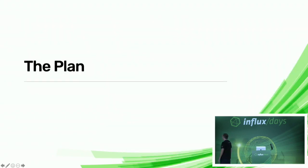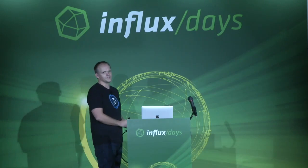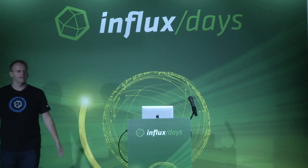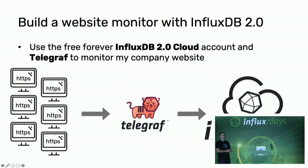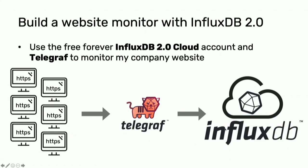I'm going to walk you through this demo. I'm going to walk you through the plan of what we're going to build, the execution of how we're going to build it, and then do the big reveal where I jump into our Cloud 2 instance and we look at data and build out this alerting system. The plan: we're going to build a website monitor with InfluxDB 2.0, using our free forever tier in Cloud 2 and Telegraf to monitor our websites. You've got a bunch of websites, Telegraf collects all that information, pumps it into InfluxDB, and then we use our UI to analyze that data and build out monitoring and alerting.